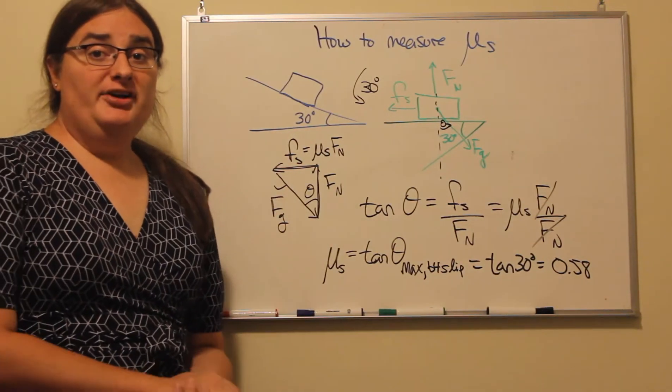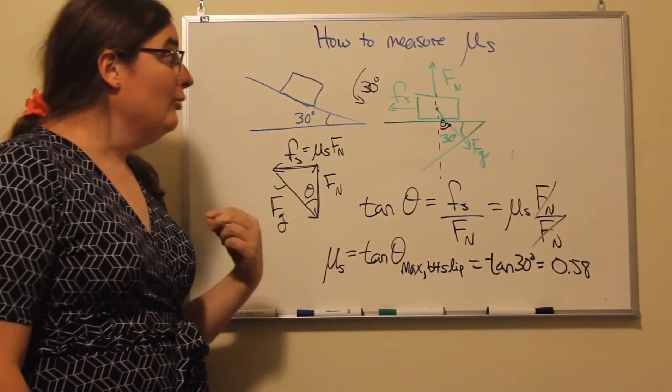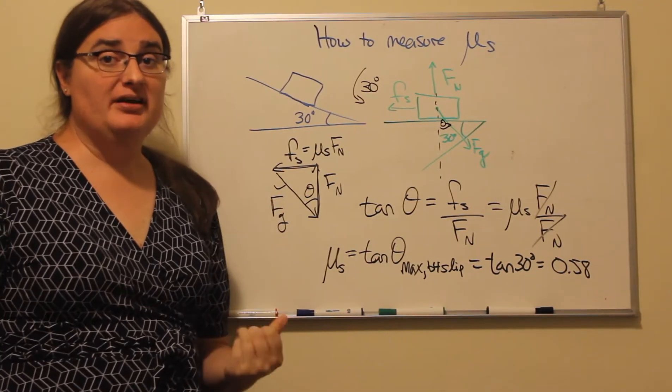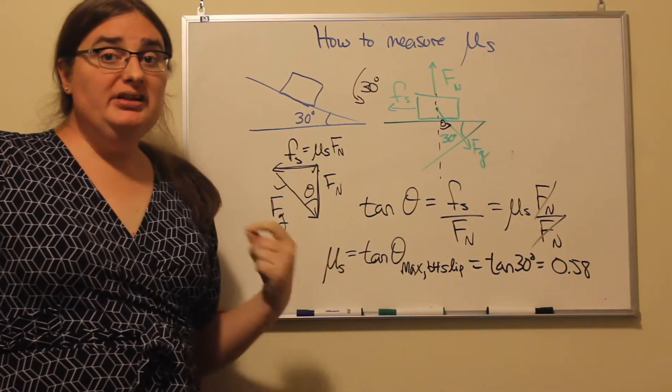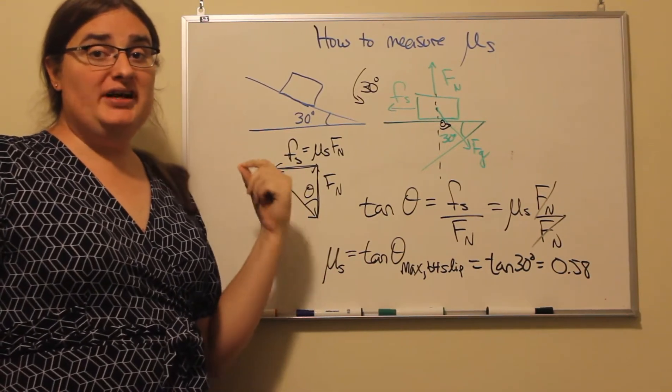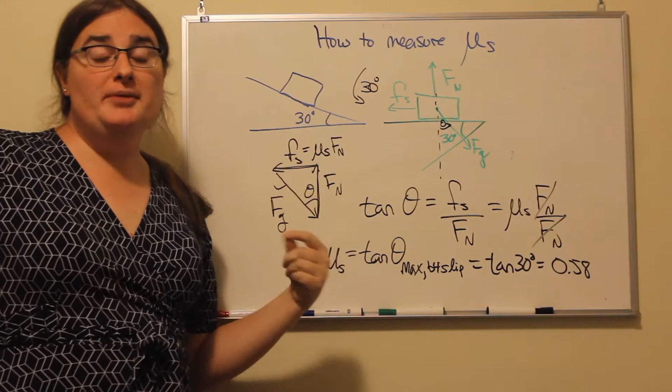Hi, I want to do an example talking about how we can measure the coefficient of static friction for an object. All you need is a ramp with the object and the surface that you want to measure the coefficient of static friction between.